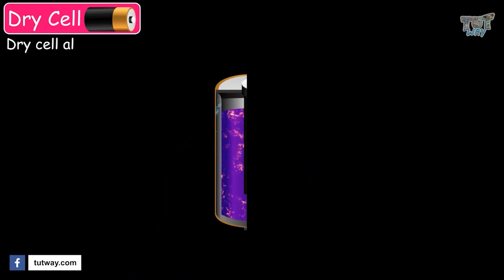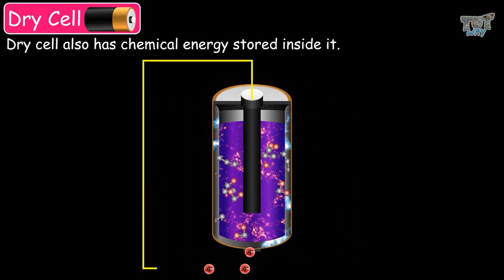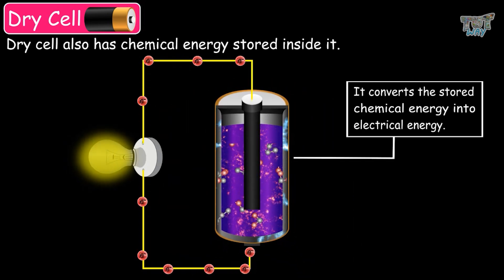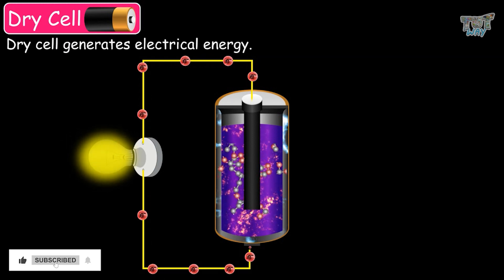The dry cell also has chemical energy stored inside. It converts the stored chemical energy into electrical energy. So, the dry cell generates electrical energy.